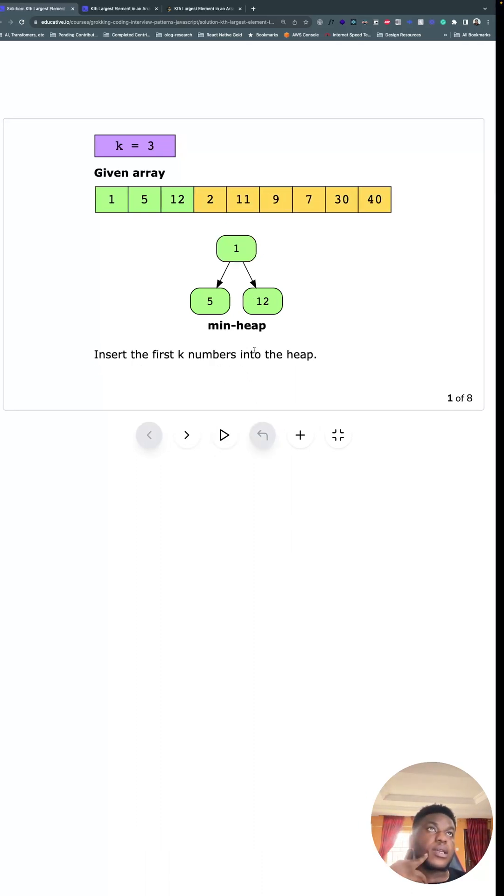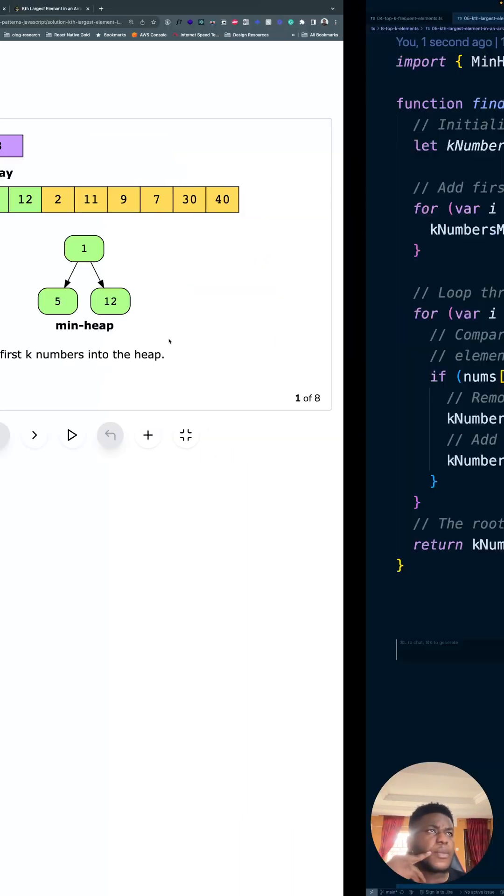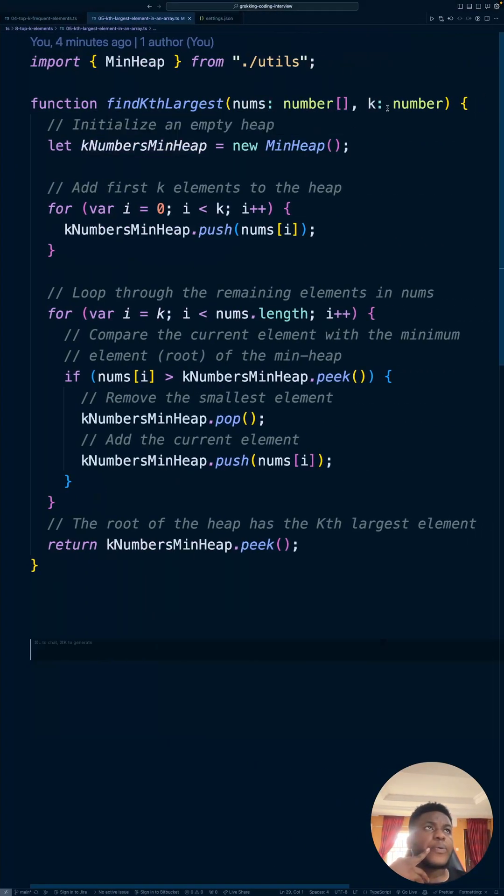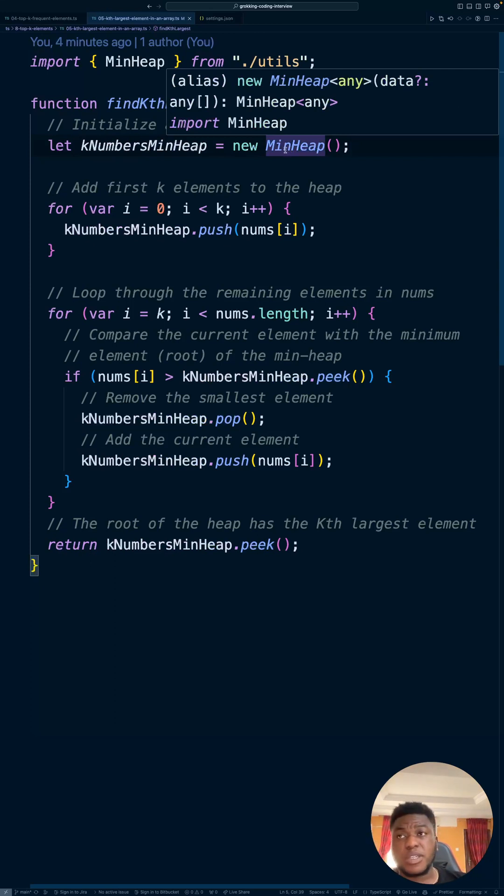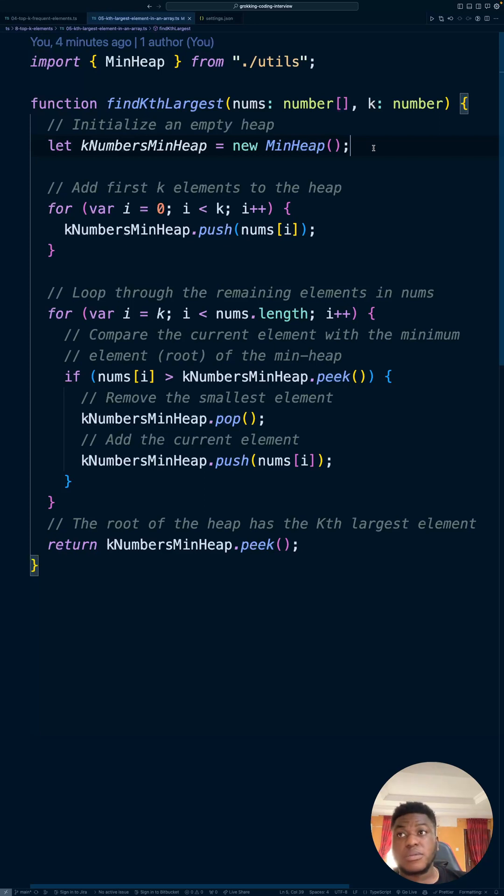Now, what does this look like in code? So we pass in the numbers, unsorted list of numbers, the k, the position we're looking for. We initialize our minimum heap over here. Now, I'm not going to go into the implementation details of a minimum heap or priority queue, because a lot of languages come with it included in a standard library. And there are packages you can install that would give you that feature set. But you can feel free to look at the implementation in the link to the GitHub.